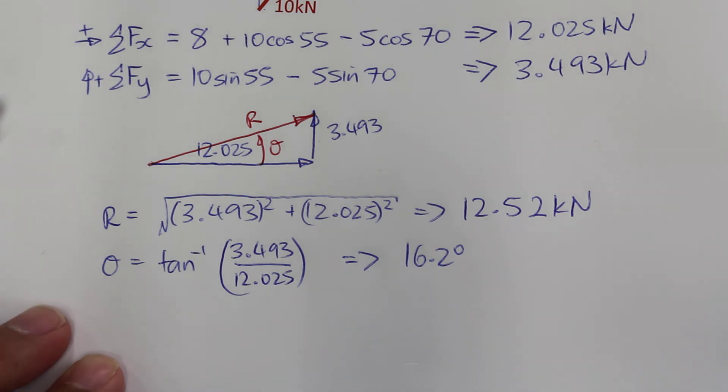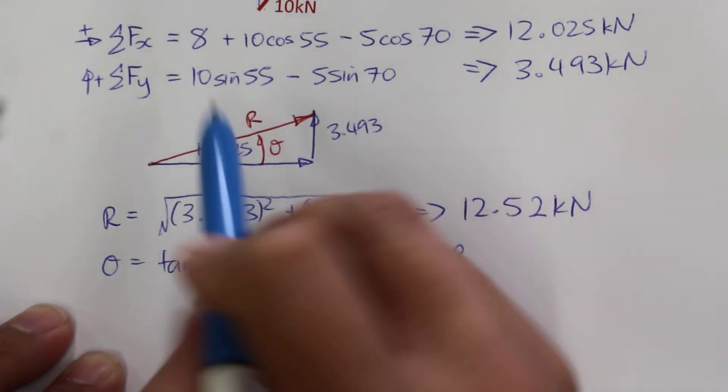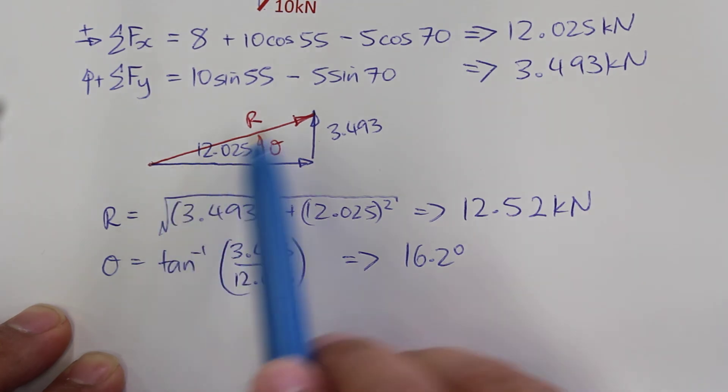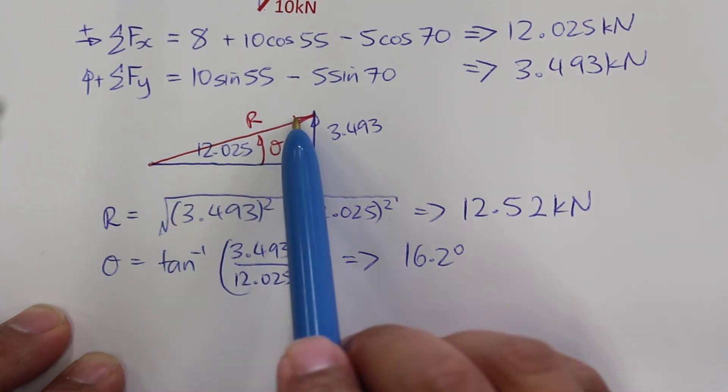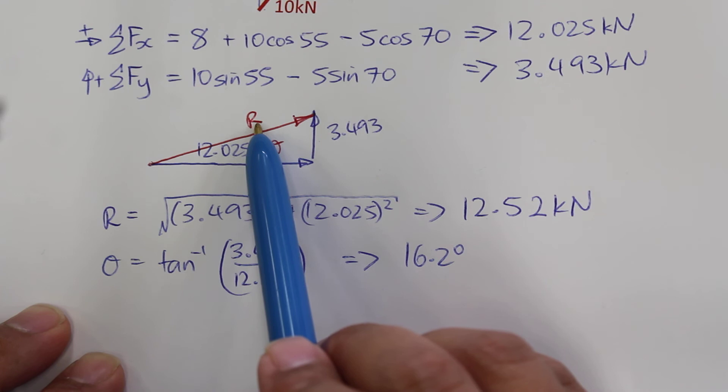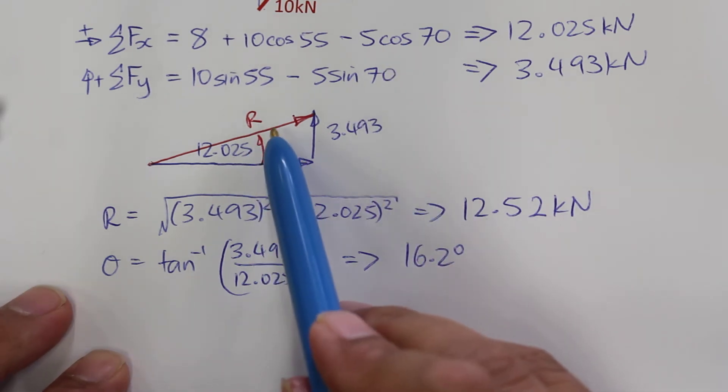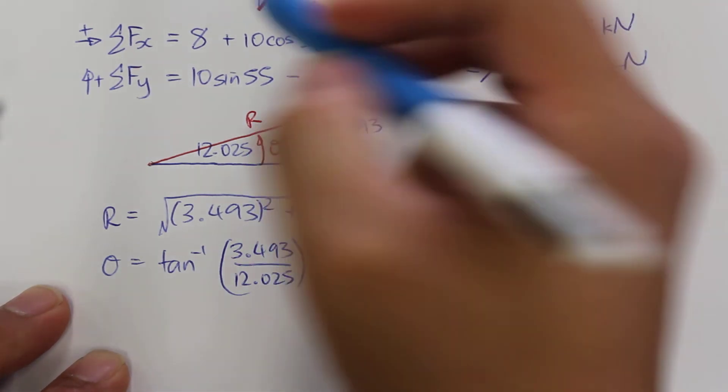Now the question asks us for the force that is required to put the system back into equilibrium. So that will be the force which is equal in magnitude but opposite in direction to this resultant force.